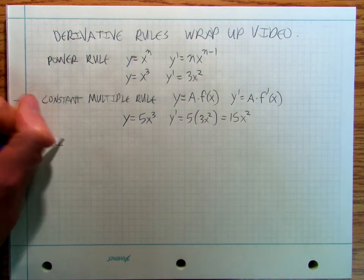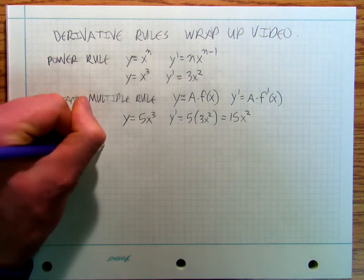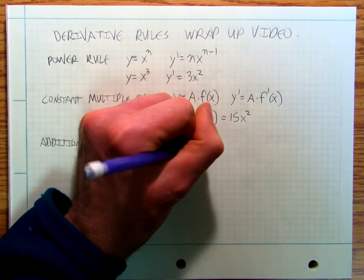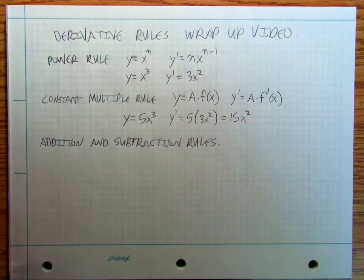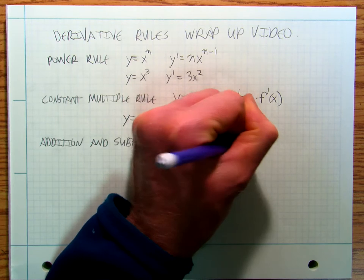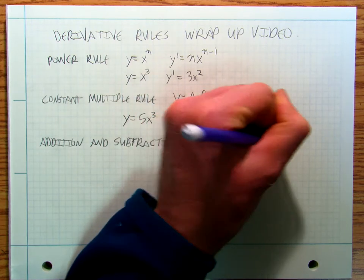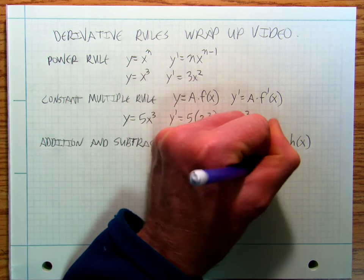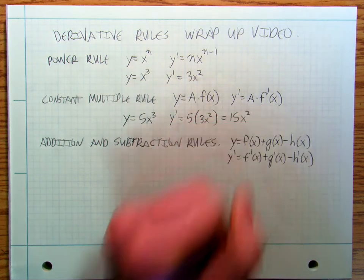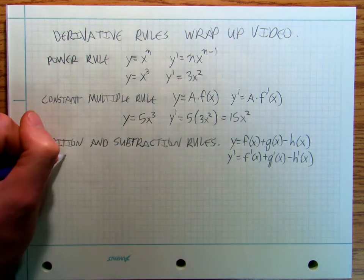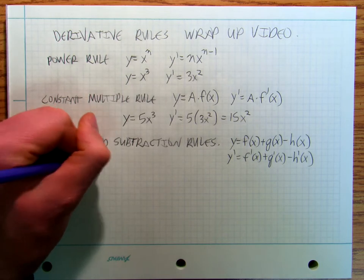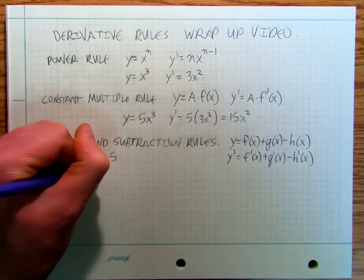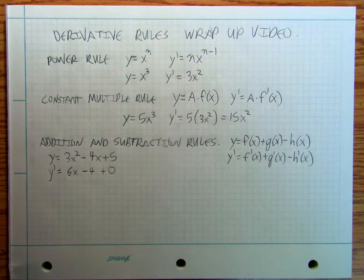Addition and subtraction rule: y equals f of x plus g of x minus h of x, y prime is equal to f prime of x plus g prime of x minus h prime of x. So if I've got y equals three x squared minus four x plus five, y prime is equal to six x minus four plus zero.